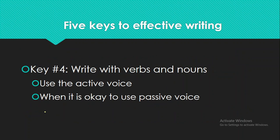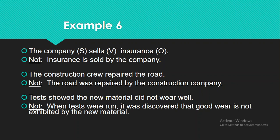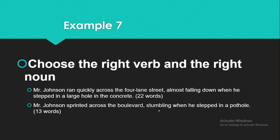The fourth tip is that you have to write with verbs and nouns. You should be using the active voice and should know when it is okay to use the passive voice. For example, say 'The company sells insurance' instead of 'Insurance is sold by the company.' Say 'The construction crew repaired the road' instead of 'The road was repaired by the construction company.' And say 'Tests showed the new material did not wear well' instead of 'When tests were run, it was discovered that good wear is not exhibited by the new material.'